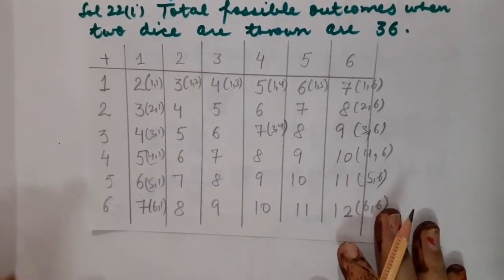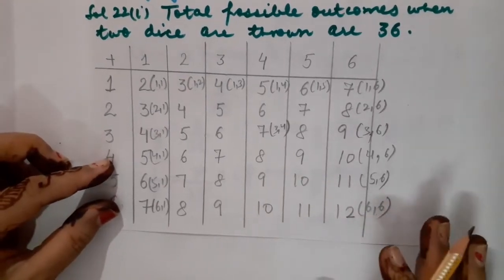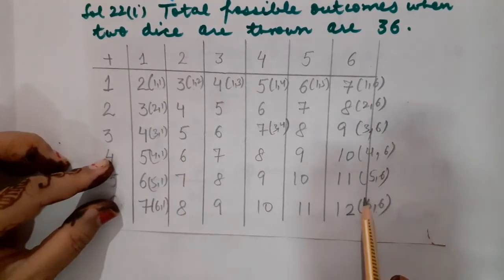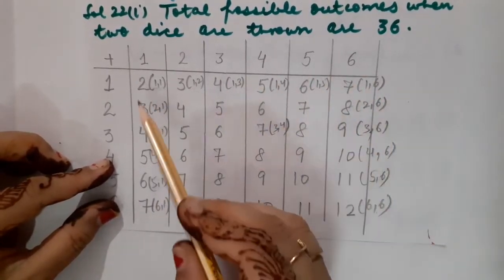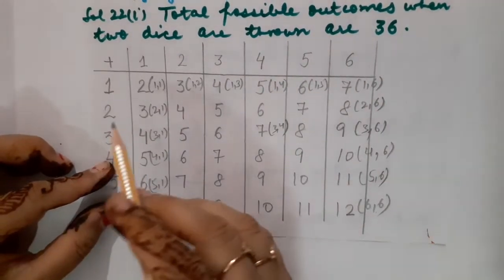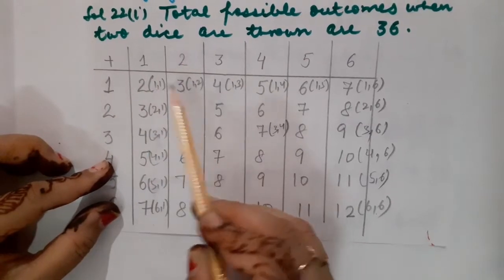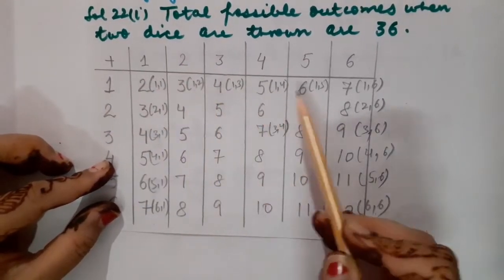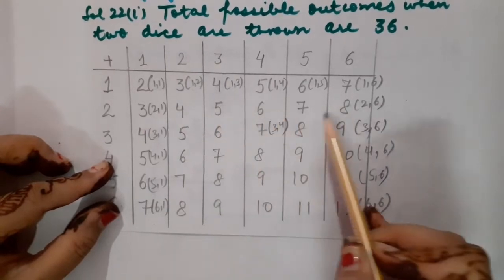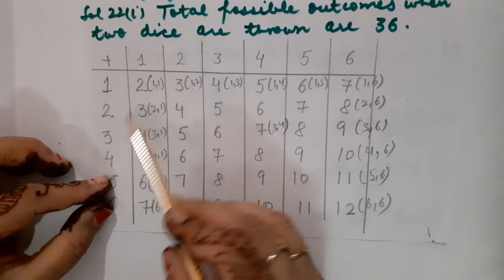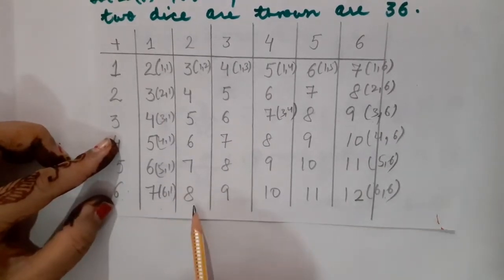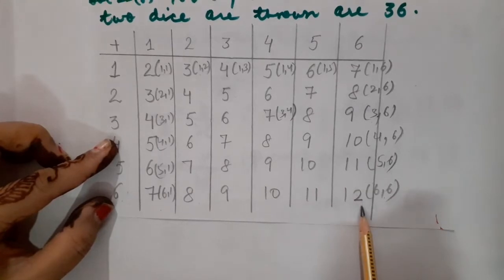Now when the question comes related to addition, you are not supposed to write all possible outcomes explicitly. Instead, make a sum table. For example: 1+1=2, 1+2=3, 1+3=4, then 5, 6, 7. Then 2+1=3, 2+2=4, 2+3=5, 6, 7, 8. Then 3+1=4, 3+2=5, 3+3=6, and so on. The last values in the table will be 7, 8, 9, 10, 11, and 12.